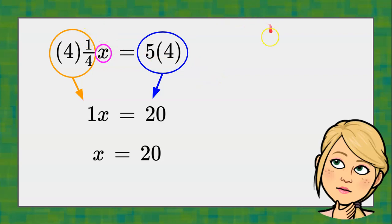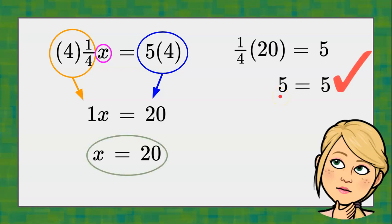So let's go back to our original equation and plug in 20 for the x. So instead of 1/4 times x, 1/4 times 20, 20 divided by 4 is 5. It checks, and my solution for this equation is x equals 20.